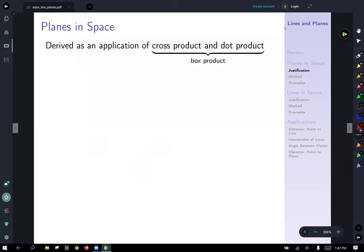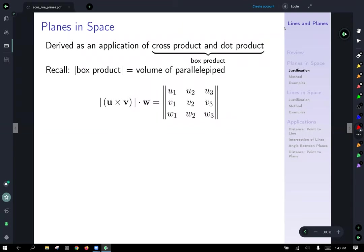So what we're going to do is we're going to now take a look at planes in space first. We're going to try and derive the equation of planes in space as an application of the cross product and the dot product, in particular, the combination of the two in the form of the box product. So recall that the absolute value of the box product gave the volume of the parallelepiped that was generated by the three vectors involved, u cross v dotted with w.